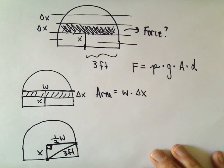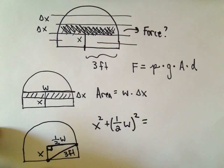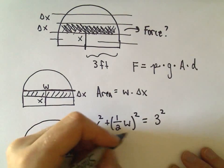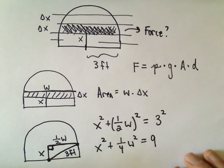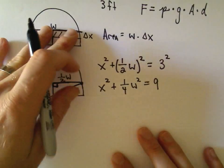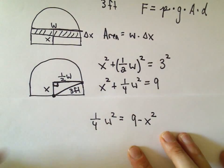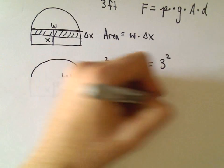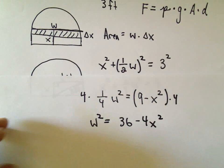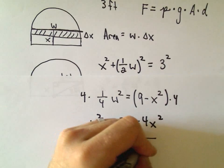I'm going to use the Pythagorean theorem to find an expression for w in terms of x. We've got a little right triangle here, so: x squared plus (one-half w) squared equals the hypotenuse squared, which is 3 squared. So x squared plus one-fourth w squared equals 9. We can then say one-fourth w squared equals 9 minus x squared, and multiplying both sides by 4 gives us w squared equals 36 minus 4x squared. Taking the square root of both sides: w equals the square root of 36 minus 4x squared.